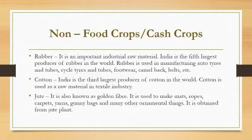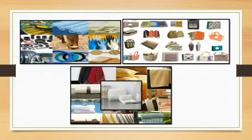Non-food crops or cash crops. Rubber: it is an important industrial raw material; India is the fifth largest producer of rubber in the world. Rubber is used in manufacturing auto tires and tubes, cycle tires, footwear, camel bags, and belts. Cotton: India is the third largest producer of cotton in the world; cotton is used as a raw material in the textile industry. Jute: also known as golden fiber, it is used to make mats, ropes, carpets, yarns, gunny bags, and many other ornamental things.